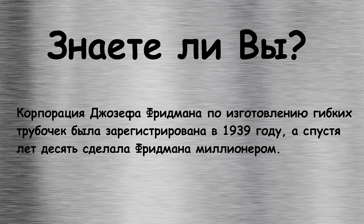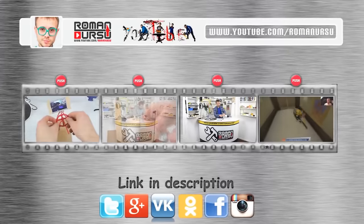Did you know? Joseph Friedman's corporation, which specialized in manufacturing bending straws, was registered in 1939. And after about 10 years, Friedman became a millionaire.